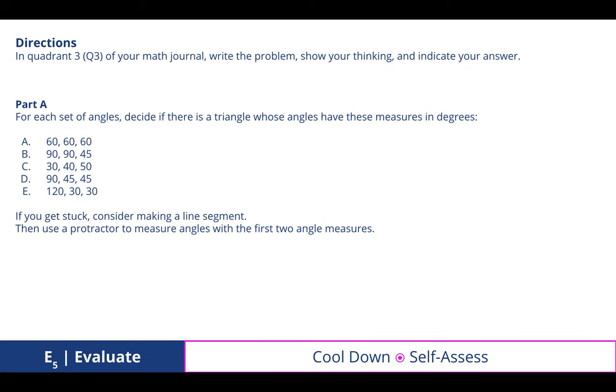So in quadrant three of your math journal, write the problem, show your thinking, and indicate your answer. We want to explore just by looking at three various angles if they, in fact, were triangles. We notice that A is an equilateral triangle, and so that does satisfy the condition. B, I notice that there are two 90-degree angles, and therefore we can't close the triangle, and it also adds up to over 180. C, as a 30-40-50, if we add those up, does not equal 180, and so it is not a triangle. D does add up to a triangle, and in fact, that's a 45-45-90, a special right triangle that you'll learn more about when you get to high school. And then E is 120 plus 30 plus 30, which is an obtuse isosceles triangle, which satisfies the conditions. If you get stuck, consider making a line segment and then using your protractor to measure those angles with the first two angle measures to see if the condition can be satisfied.